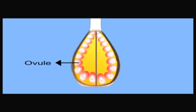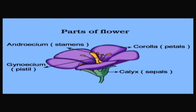Let us do one activity: cut the ovary along across its length and observe. The ovary has two to four chambers in which grain-like structures called ovules are present. Ovules contain female gametes. Androecium and gynoecium play an important role in sexual reproduction, hence they are known as essential parts of the flower. The calyx and corolla protect the essential parts of the flower and also attract insects for pollination, hence they are known as accessory parts of the flower.